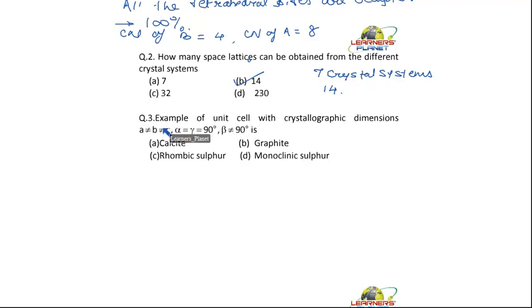Now we have got the third question: Example of unit cell with crystallographic dimensions A is not equal to B and B is not equal to C, and alpha is equal to gamma is 90 degrees and beta is not equal to 90 degrees.